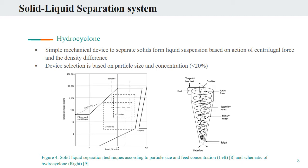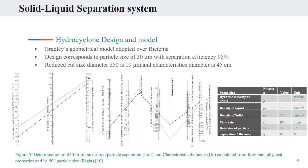The selection of this device is based on the particle size that needs to be separated and the particle load present in the mixture. Generally for concentration less than 20%, hydrocyclone can be a suitable option. For hydrocyclone design and model, two geometries have been proposed by Rietema and Bradley. In this case, Bradley's geometrical model is adopted over Rietema because past studies show that Rietema geometry works efficiently for coarser particles while Bradley geometry has higher separation efficiency for finer particles.